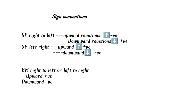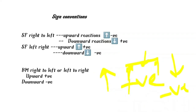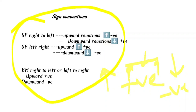For bending moment sign conventions: when considering from the left side, an upward reaction gives a positive bending moment and a downward reaction gives a negative bending moment. Sign conventions are very important to solve problems correctly.